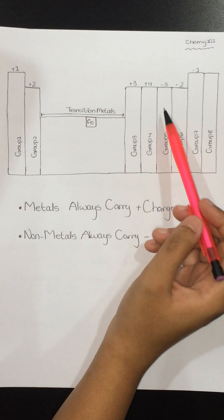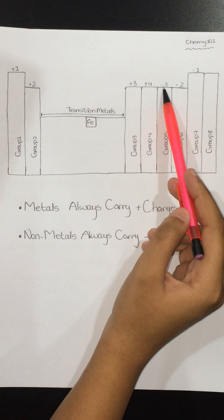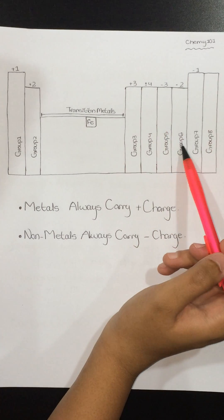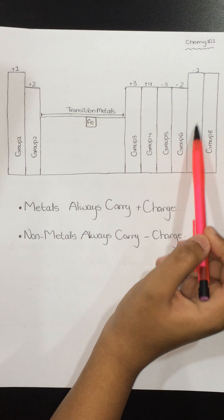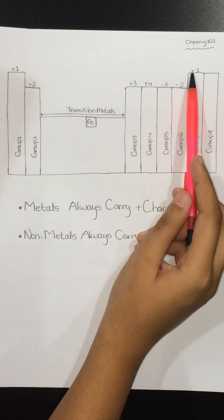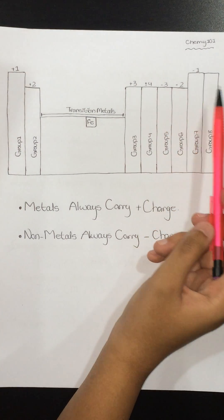Group 5 has a charge of negative 3. Group 6 has a charge of negative 2. Group 7 has a charge of negative 1.